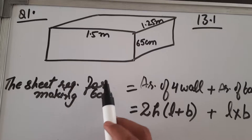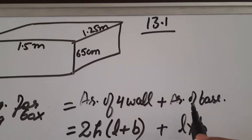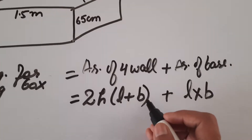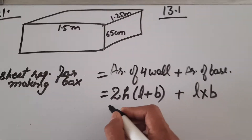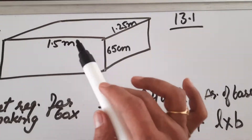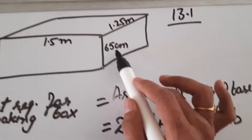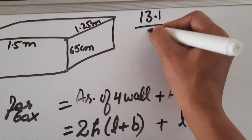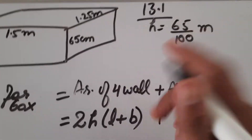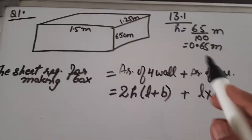The sheet required for making the box equals area of four walls plus area of base, which is 2h into (l plus b) plus l into b. Before putting in the dimensions, be very careful that all units must be the same. Two dimensions are in meters but height is in centimeters, so convert height to meters by dividing by 100, giving 0.65 meters.